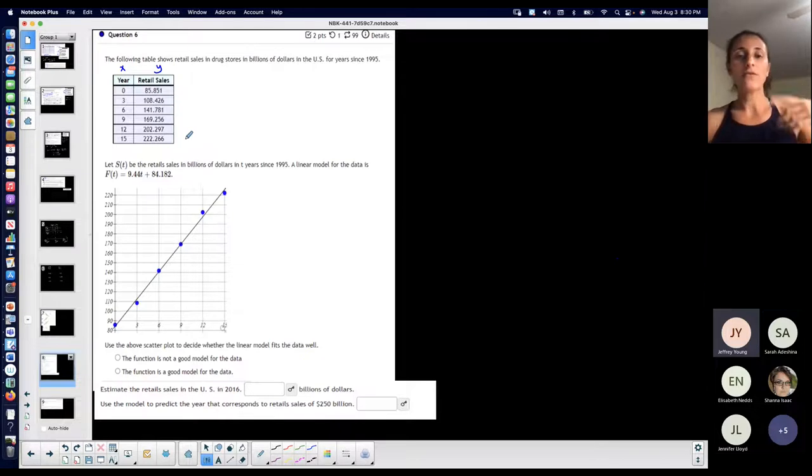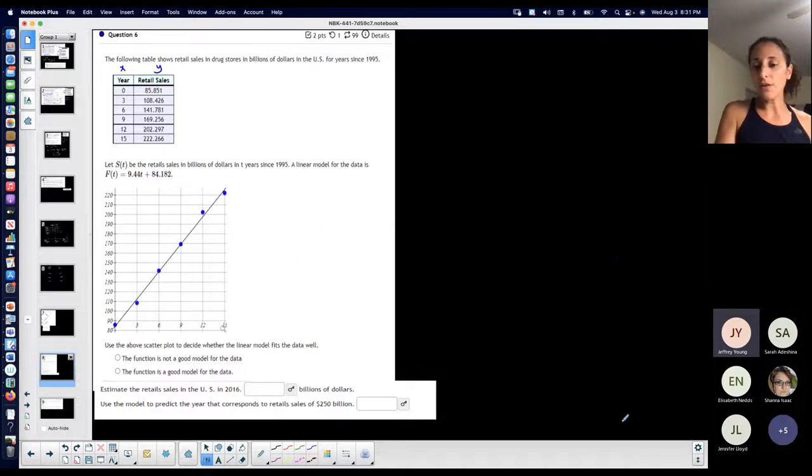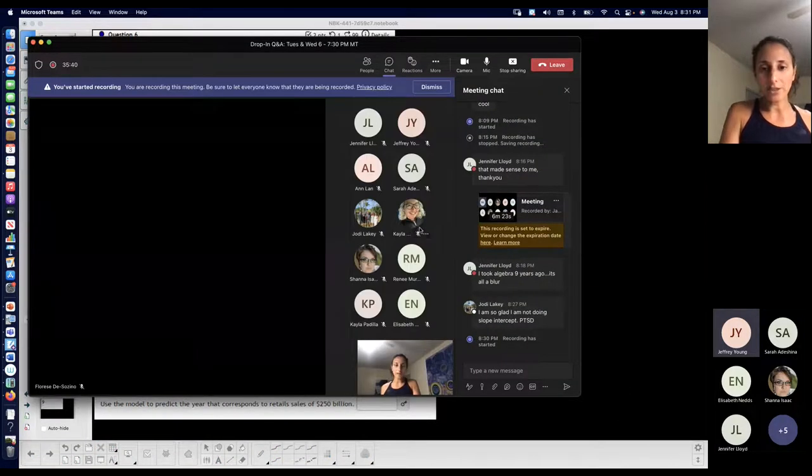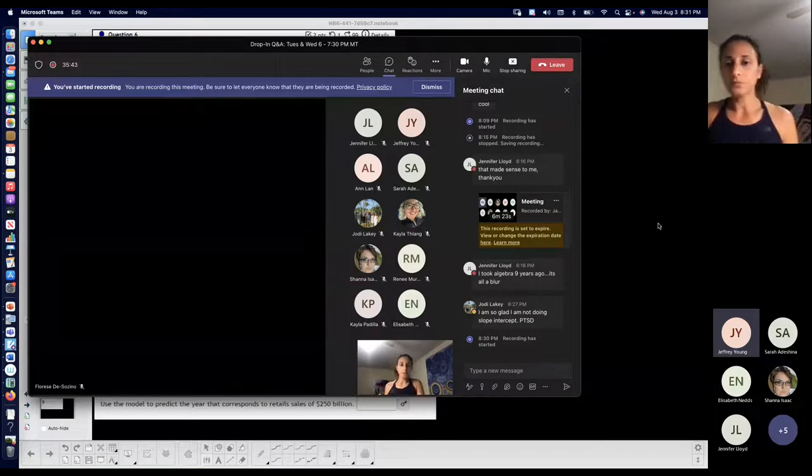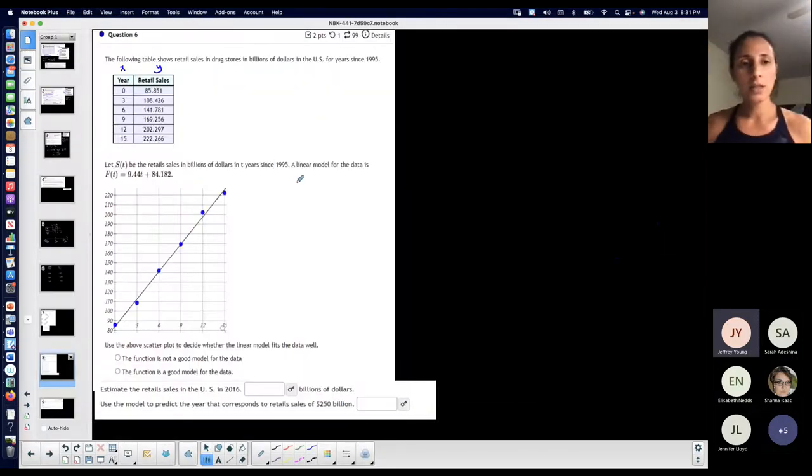If you remember back in algebra, if you're ever trying to find a point on a graph, you basically pick an X and you solve for Y, right? That was what we did back in the good old days. But that's because your X is your independent, Y is dependent on what you chose for X. So Y is your dependent variable and X is your independent variable. So in this case, the retail sales is dependent on the year that we're talking about.